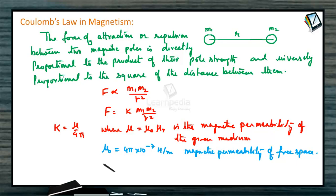Whereas mu r, it is the ratio of mu by mu 0 and is called relative permeability. It is a dimensionless quantity and for free space or air it is equal to unity.